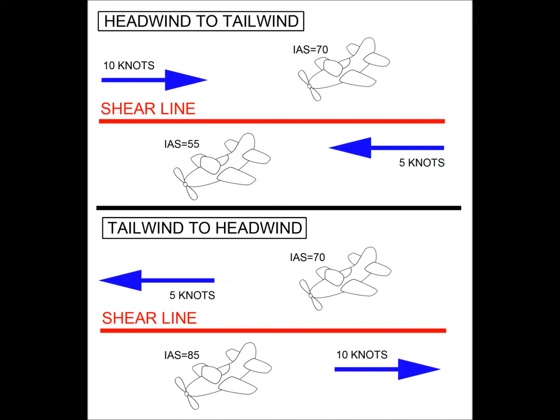In a sudden loss of a headwind, or a wind that shifts from a headwind to a tailwind, a decrease in indicated airspeed and subsequent loss of lift will result. This is the most dangerous situation near to the ground.